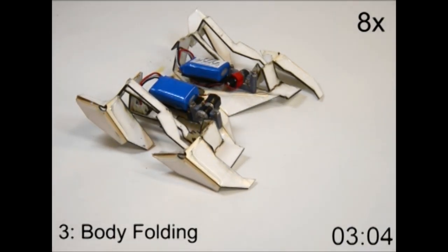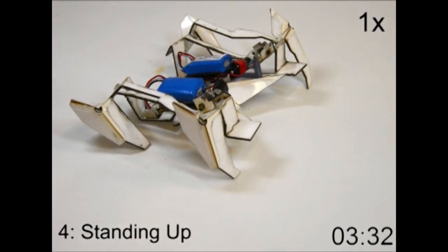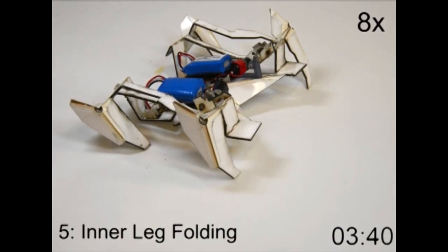The flat composite transformed into a dynamic functional machine in about 4 minutes. It then crawled away at a speed of about 5.4 centimeters, or over 2 inches per second, and it also turned, all without human intervention.